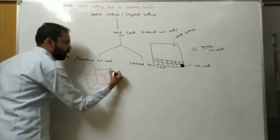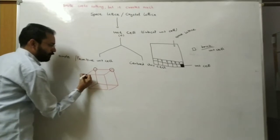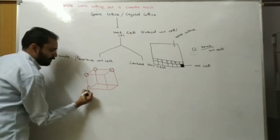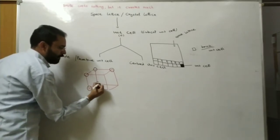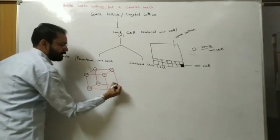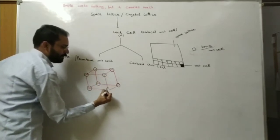How many corners of the cube? 1, 2, 3, 4, 5, 6, 7, 8.